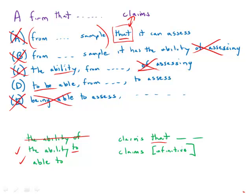Meanwhile, D: claims to be able to assess—bang. That is completely direct, completely idiomatic. It is strong, sleek, direct. It is by far the best answer choice.